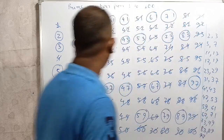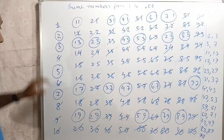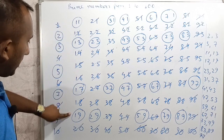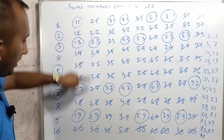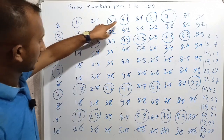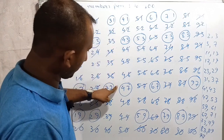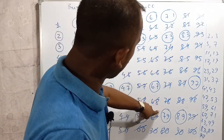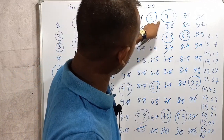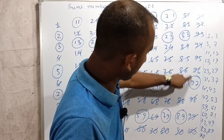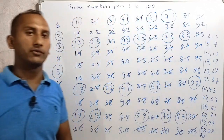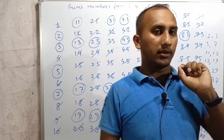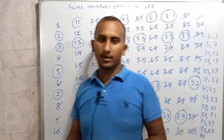From 1 to 100, the total prime numbers are: 1, 2, 3, 4, 5, 6, 7, 8, 9, 10, 11, 12, 13, 14, 15, 16, 17, 18, 19, 20, 21, 22, 23, 24, 25. There are 25 prime numbers from 1 to 100.